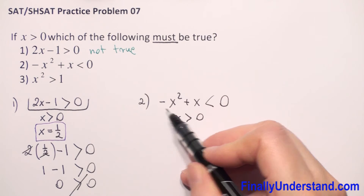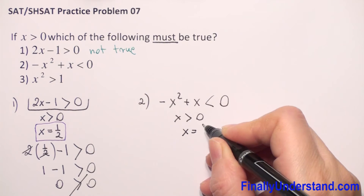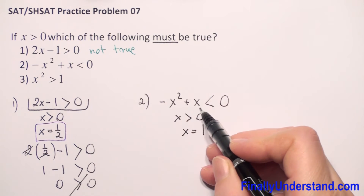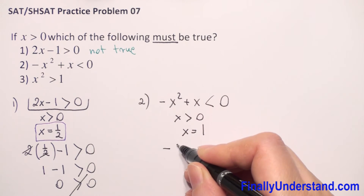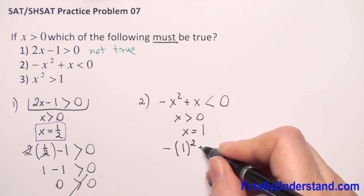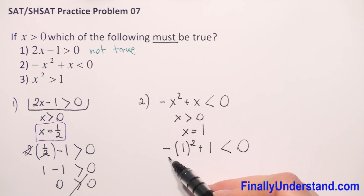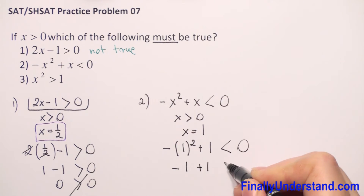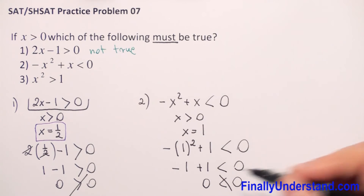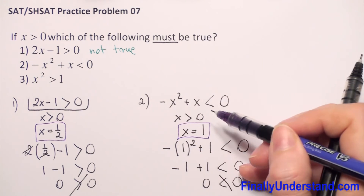Because we have a negative sign and a positive sign, and when we take 1 to the second power it's still 1, let's take x equal to 1 — the calculation will be very easy. Substituting x by 1: we have negative 1 squared plus 1, which should be less than 0. Negative 1 squared is negative 1, plus 1 gives 0. So we have 0 is less than 0 — no, that's not true. 0 equals 0, so we found one example for which the inequality is not true.